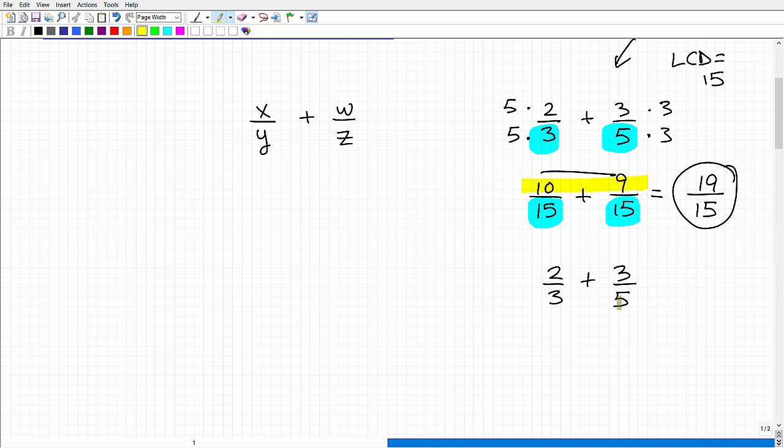I call it the bow tie method. So what you're gonna do is you're gonna multiply this times this, then you're gonna multiply this times this, and then we're gonna multiply this times this. So let's follow me along. 5 times 2, we're gonna go by this diagonal. I call it the bow tie method because it kind of looks like a bow tie, right?